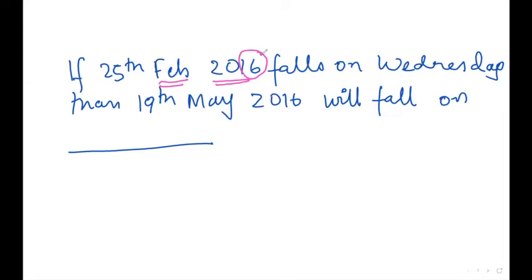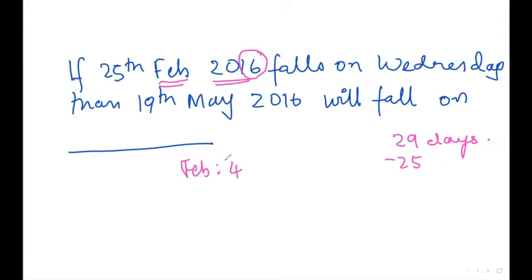Now, as 2016 is a leap year, there are 29 days in February. 25 days are already gone, so we do 29 minus 25 — that gives us 4 remaining days in February. So in the case of February, we will consider 4 days.